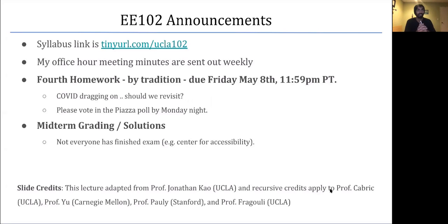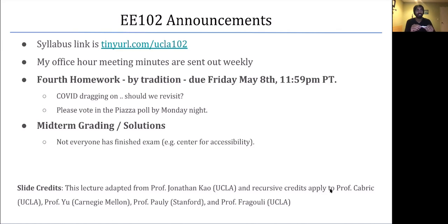By tradition, the fourth homework is going to be due this Friday. The coronavirus shelter-in-place is really dragging on, so I wonder if we should revisit this — I know a lot of people are going out for groceries with limited hours and other things on their mind. I'm thinking of extending it to Sunday for each weekly homework, no questions asked. Those who get it in by Friday get a small amount of extra credit, since this class is essentially not curved. Please vote in the Piazza poll that I set up by Monday night.